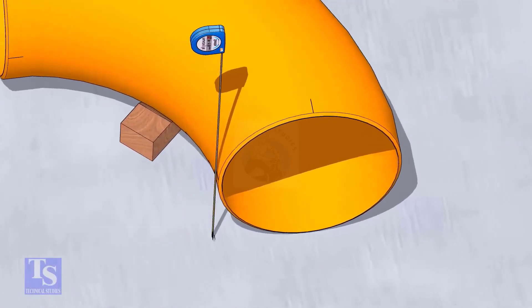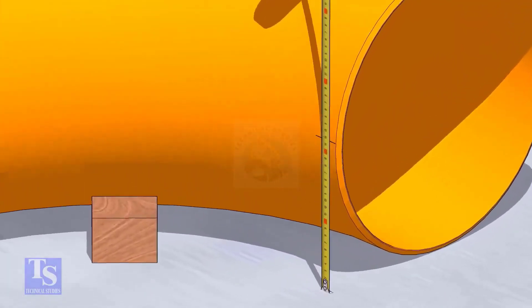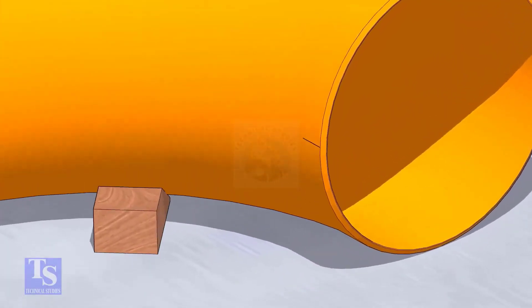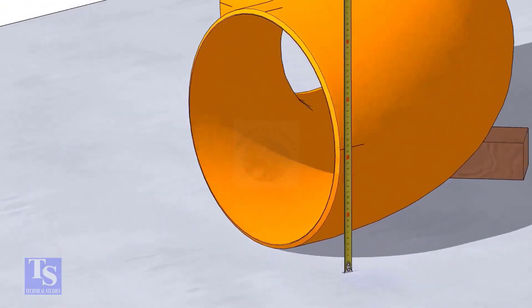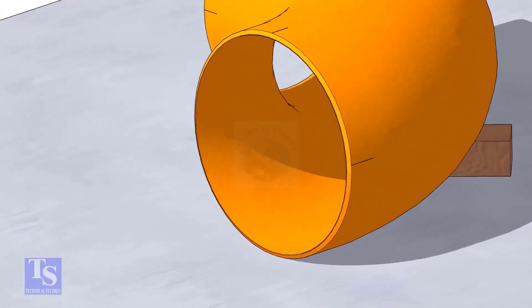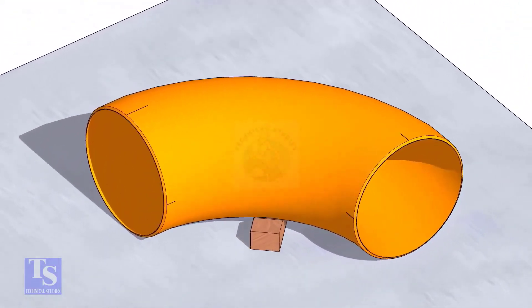Mark half diameter from the plate to the elbow on both sides as shown. Repeat the process and mark the quarters on the other end of the elbow. Rotate the elbow and mark the bottom side quarter also.